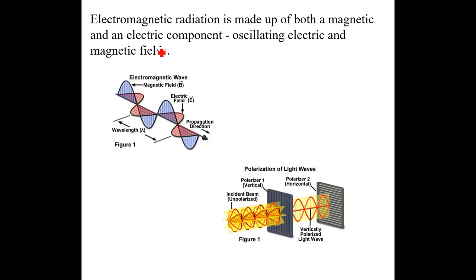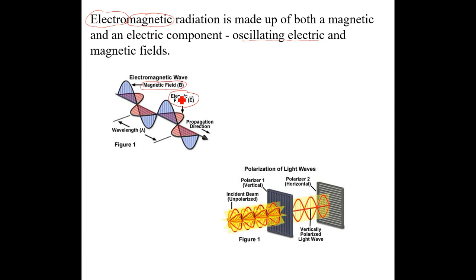Electromagnetic radiation, as the name implies, has an electrical component and a magnetic component. We've already talked about electric fields and magnetic fields, and electromagnetic radiation involves both. This picture shows these oscillating electric and magnetic fields — in red going horizontally we have the electric field, and going perpendicular to it is the magnetic field shown in blue.